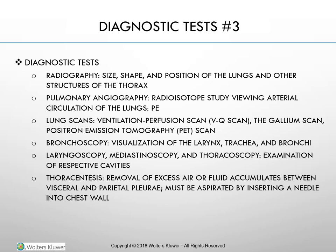Thoracentesis is done at the bedside or treatment room. The client sits at the side of the bed or is in a side-lying position on the unaffected side; if sitting, the client rests arms and head on a pillow on a bedside table. The site is determined by radiography and percussion, then cleansed and anesthetized. A needle or small tube is inserted between the ribs into the pleural space. A small dressing is applied afterward; the client lies on the unaffected side for at least one hour. A chest x-ray is done to rule out pneumothorax.